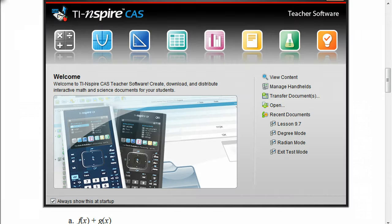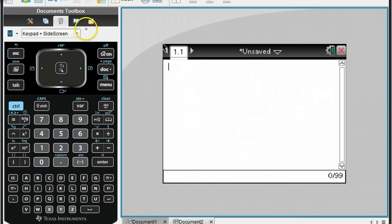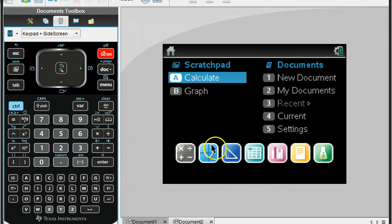So get out your calculators and go to the Home button. We want to go to a graphing screen. Now make sure that you don't use a scratch pad. We want to use this graph icon down here.